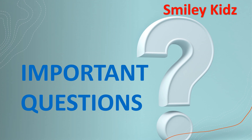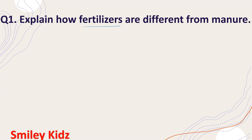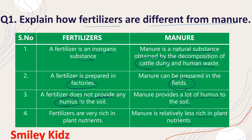Now let's discuss a few important questions. Question 1: Explain how fertilizers are different from manure. A fertilizer is an inorganic substance; manure is a natural substance obtained by decomposition of cattle dung and human waste. A fertilizer is prepared in factories; manure can be prepared in fields. A fertilizer does not provide humus to the soil, but manure provides a lot of humus. Fertilizers are very rich in plant nutrients whereas manure is relatively less rich.